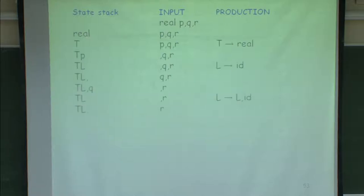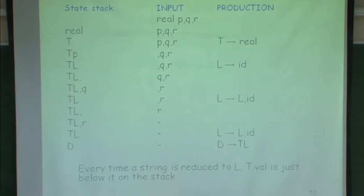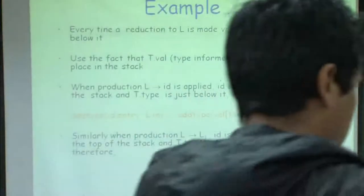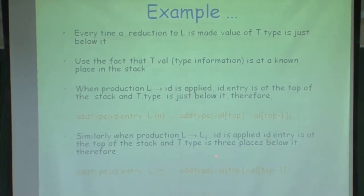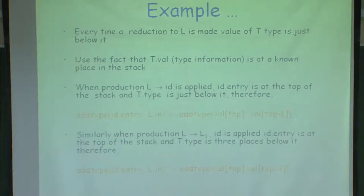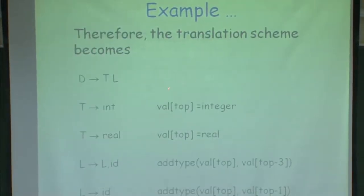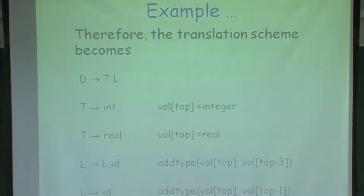We went through the example of finding out that whenever certain reductions take place — either L goes to L comma id or L goes to id — I was able to find the value of the type information from the stack. The entry corresponding to L going to id could be replaced by finding that type information is in the stack just below the value. When doing reduction by the rule L going to L comma id, type information was always at top minus 3. Once I identified these stack positions, I was able to eliminate all copy rules and directly make these entries.